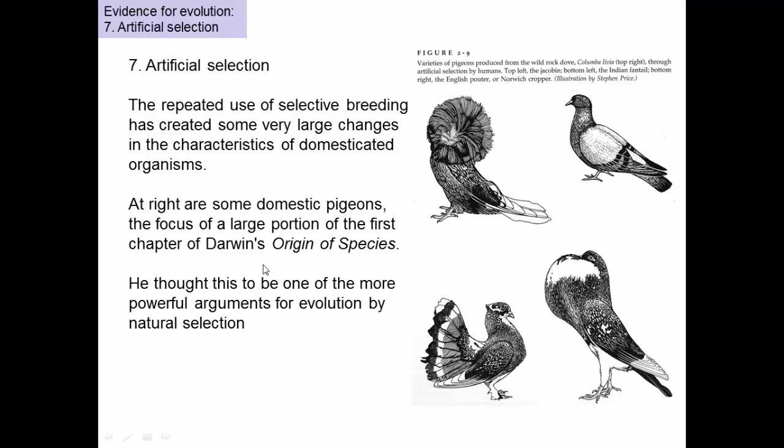In fact, if you read Darwin's book, his famous book Origin of Species, one of the very first things he talks about is how the fact that we're able to do this is demonstration of the ability that organisms have within them to change when selection is imposed. Now, normally nature is imposing the selection when we're thinking about evolution, but when we do the selection, we can see some changes as well.